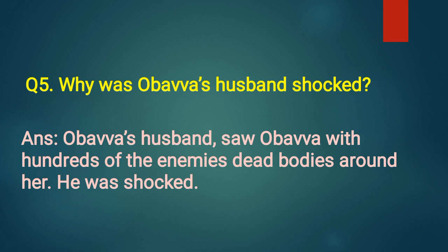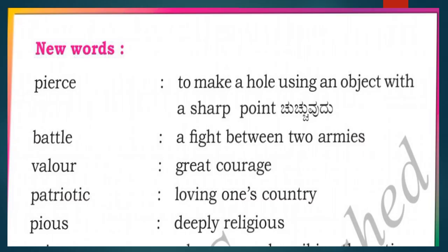These are the question answers related to the Vana Ke Obava story. Next, our main chapter: Kitturu Rani Channamma. New words and their meanings. First: 'pierce' means to make a hole using an object with a sharp point. Next: 'battle' means a fight between two armies.